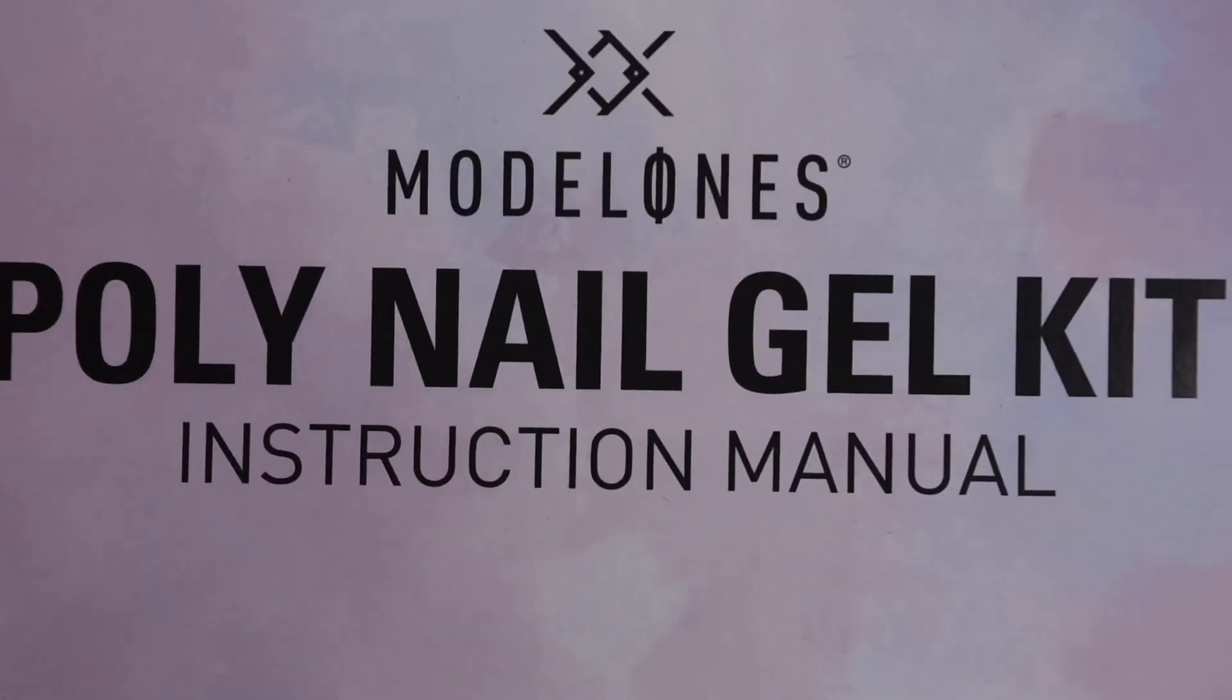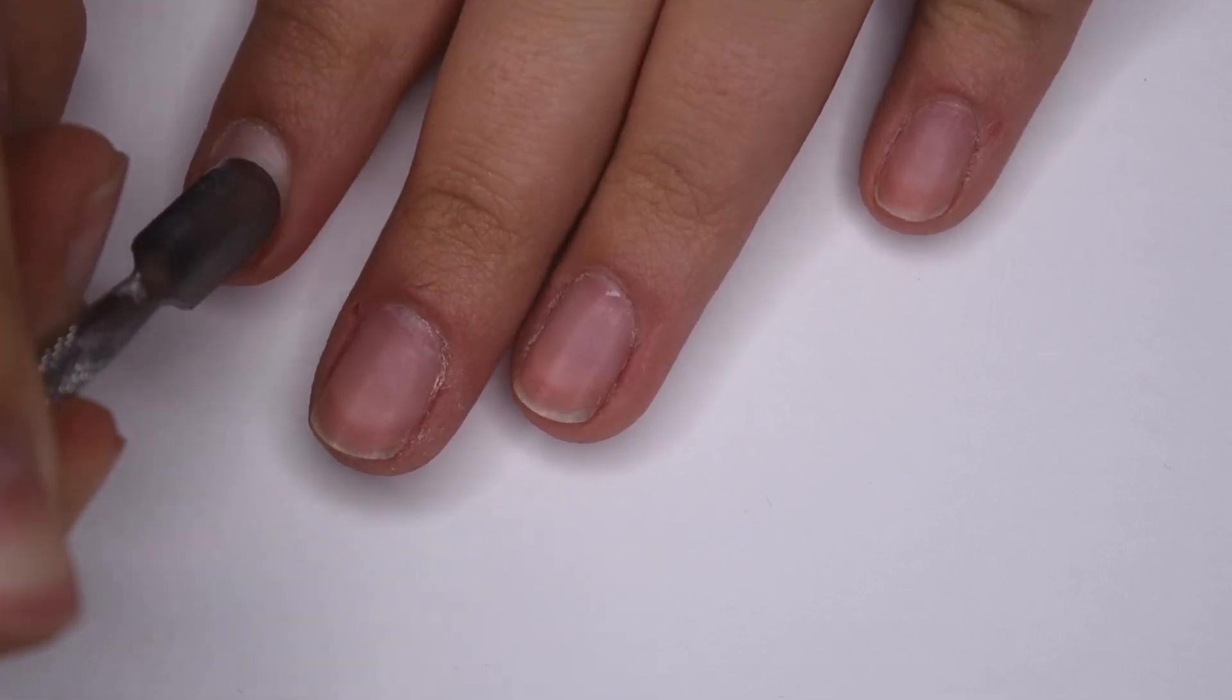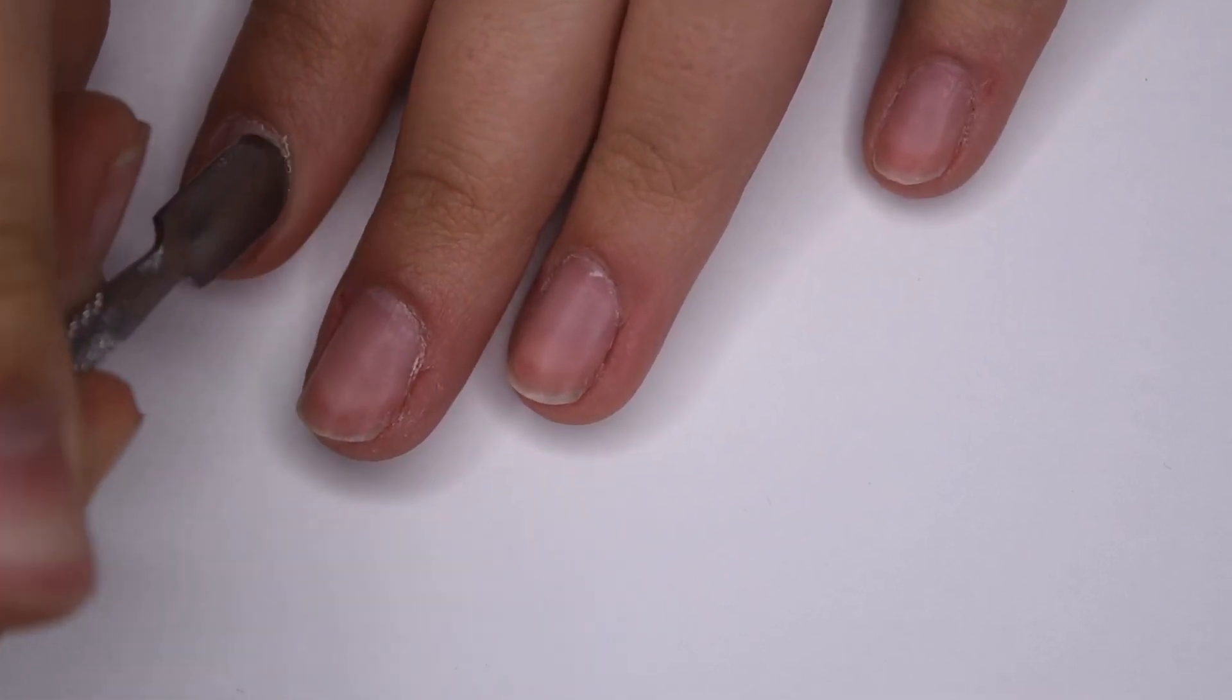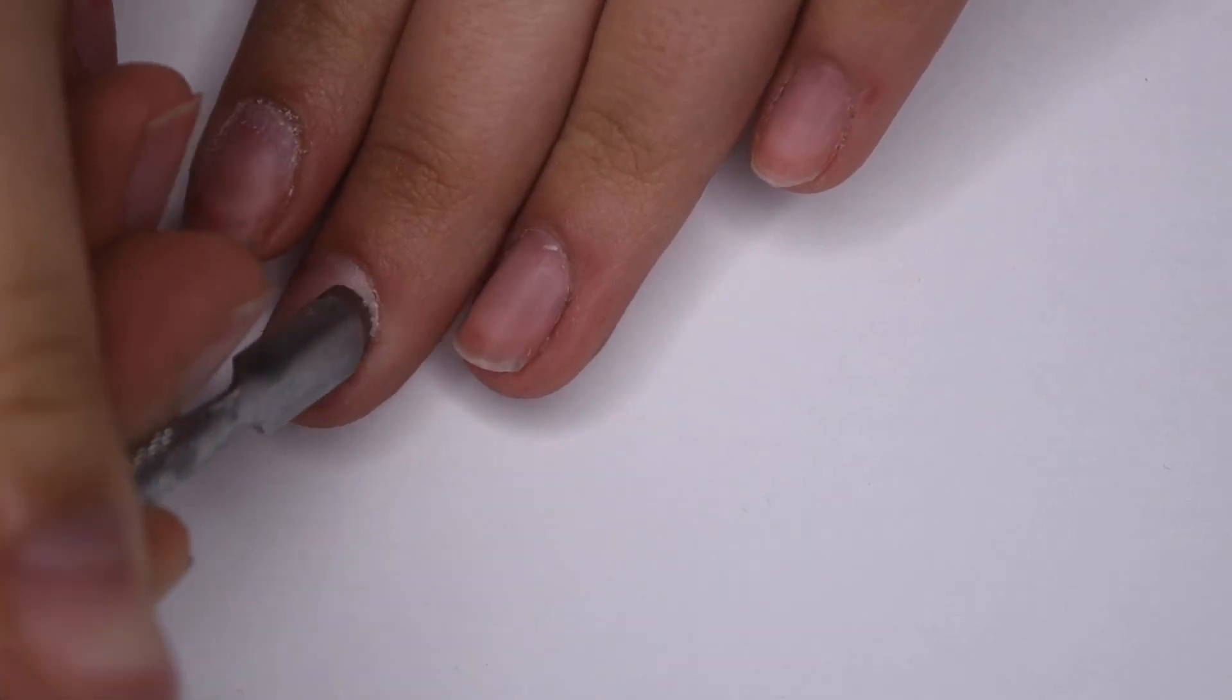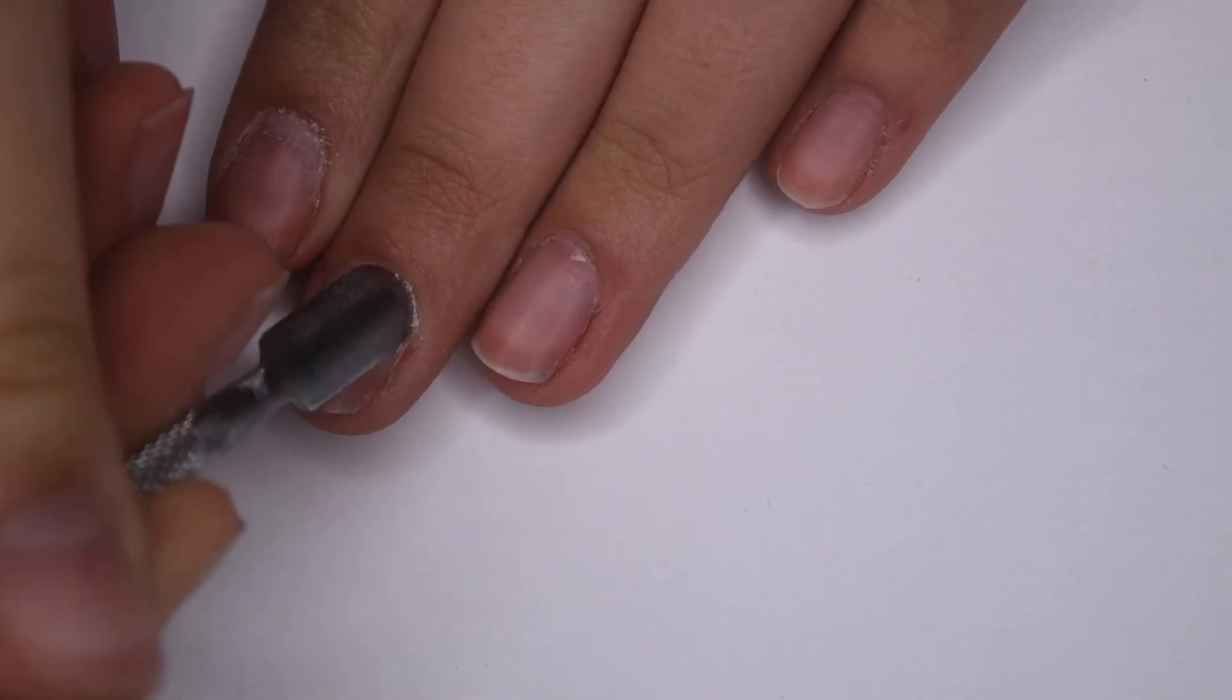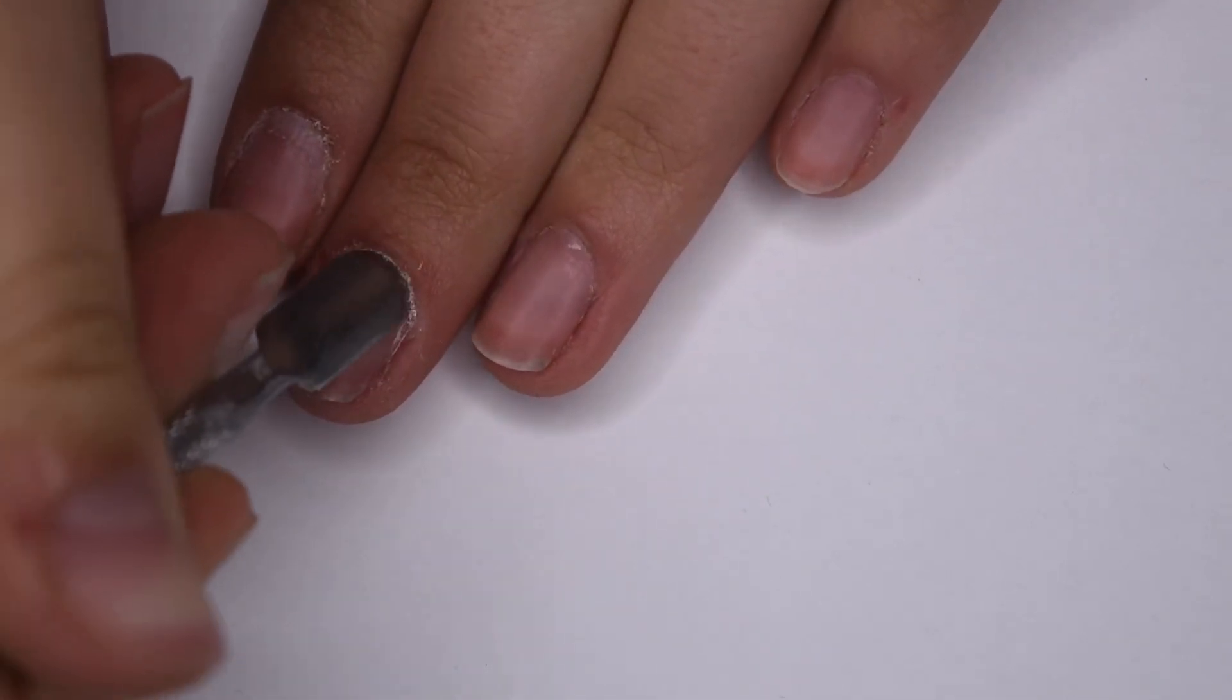And before I started my manicure, I read through all of the instructions. And now I'm going to be going in with a cuticle pusher and gently pushing back my cuticles. And this will get up all of that dead skin stuck on the nail plate, which could interfere with the adhesion of the polygel. And I just want to mention, please excuse my cuticles and dry skin around my nails.